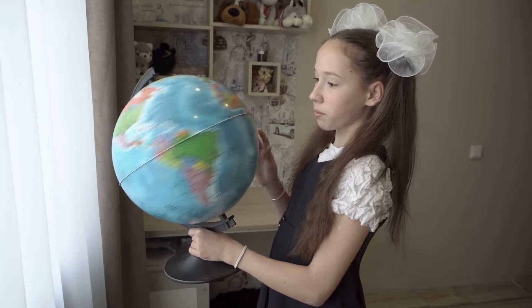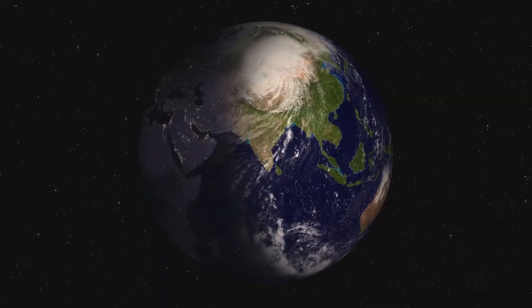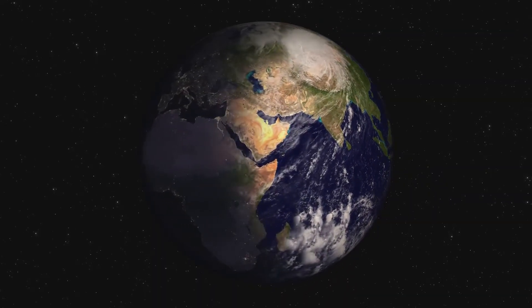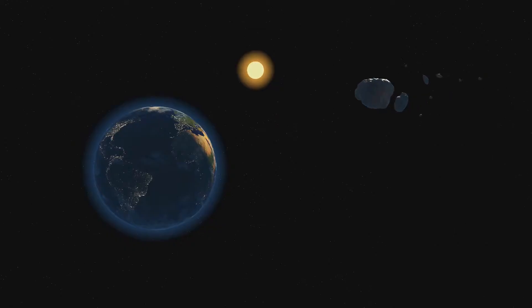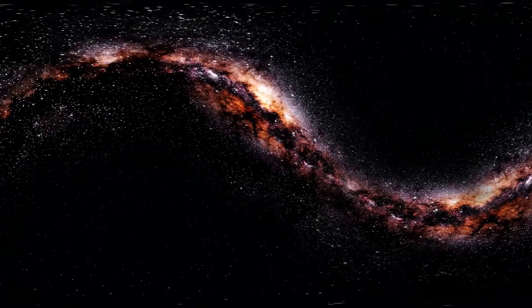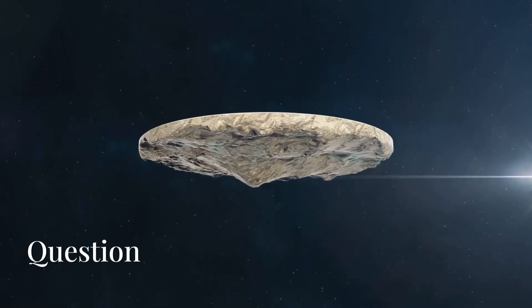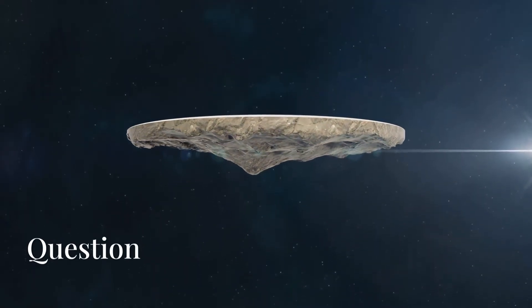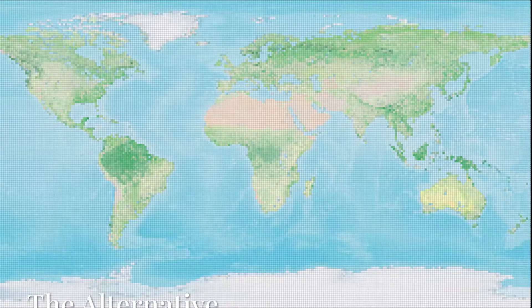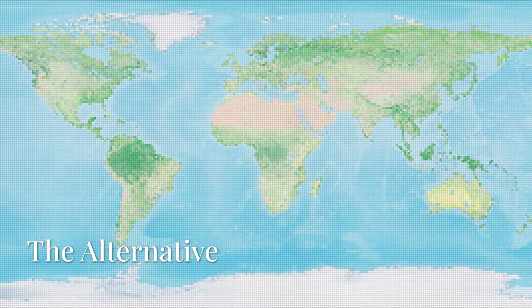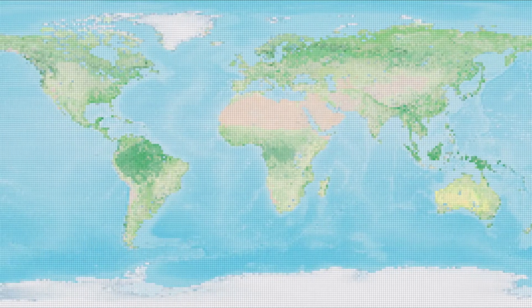You've been told since childhood that the Earth is a globe, that we're spinning through space at 1,000 miles per hour, orbiting the Sun at 67,000 miles per hour, in a galaxy hurtling at 1.3 million miles per hour. But what if none of that is true? What if the Earth is flat?